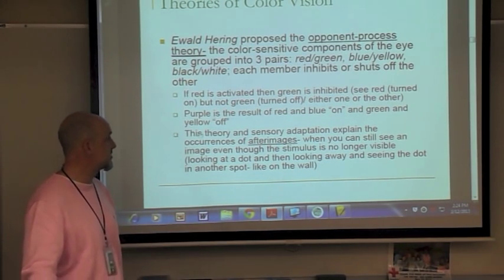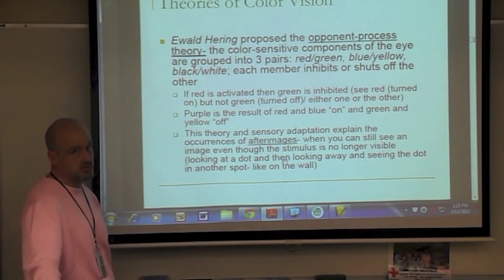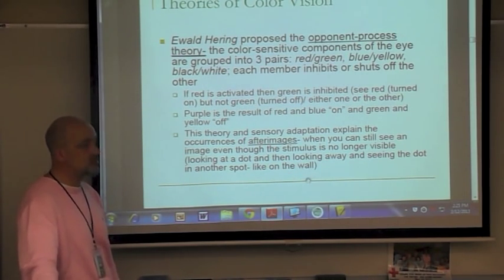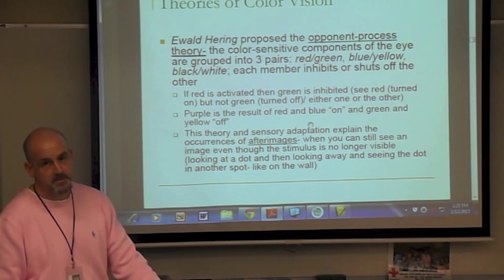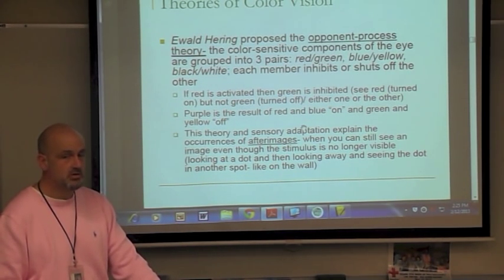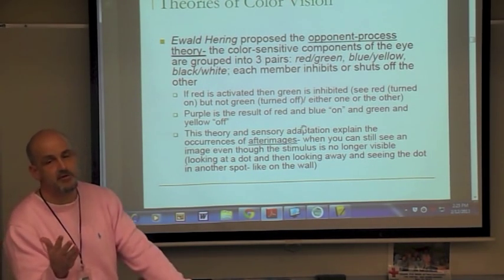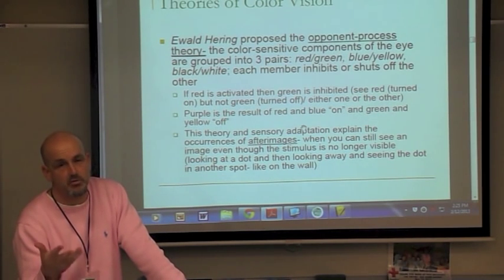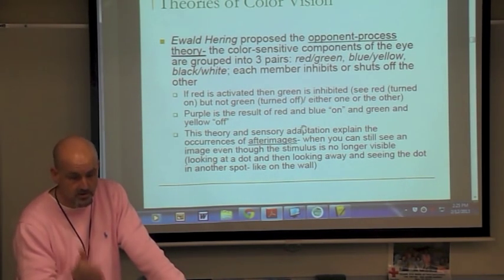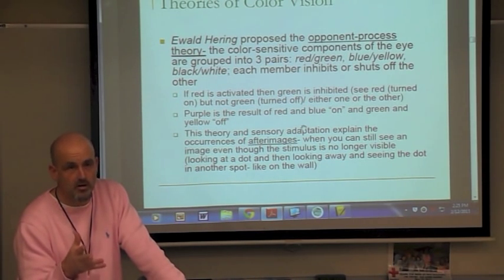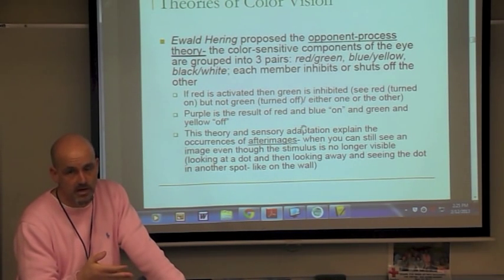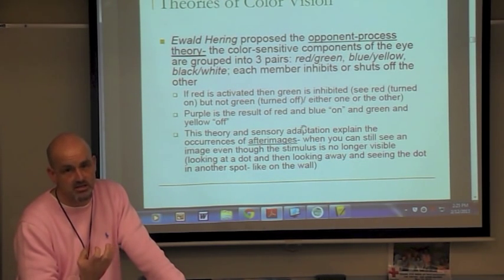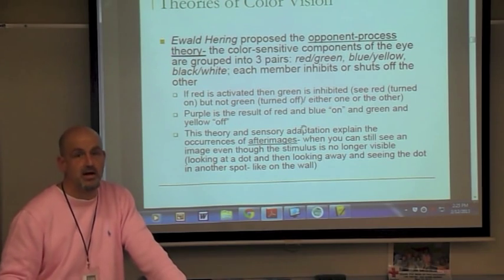The opponent process theory explains after images. When you stare at a red dot and look away, you'll see a green dot. By staring at the red dot, through sensory adaptation you lose sensitivity to red — effectively turning it off — and then when you look away, green turns on. This is why after images occur, and the same applies to blue-yellow and black-white pairs.